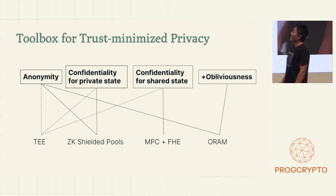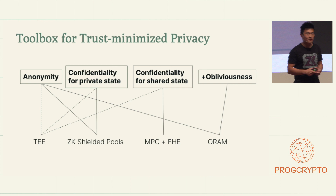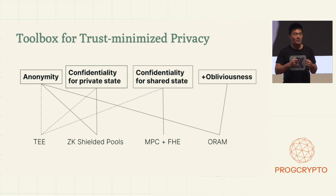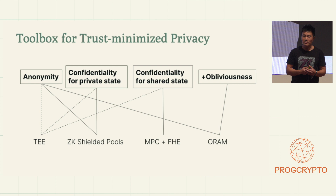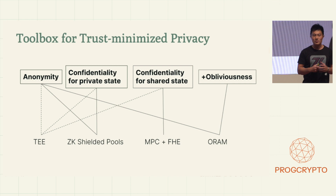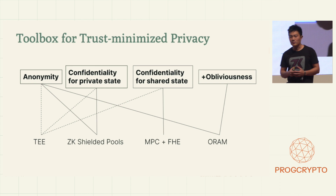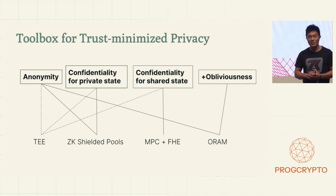For the rest of the talk, let me discuss the two sets of tools we have to achieve these properties. On the left-hand side, we have trusted execution environments, or TEEs. They shift trust from hardware operators to hardware providers or makers, like Intel or Apple — so they're definitely in the more trusted regime. On the right-hand side, we have the techniques you've been hearing about today: zero-knowledge proofs, multi-party computation, fully homomorphic encryption, and I'll add one more — oblivious RAM.